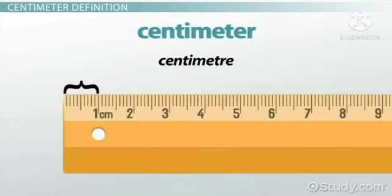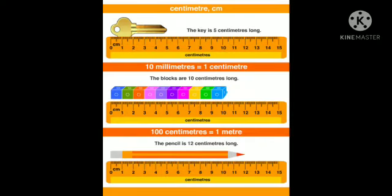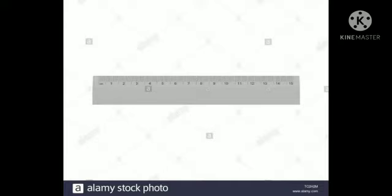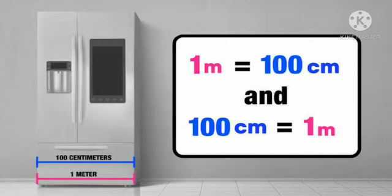Centimeters. It is too long to measure short things, such as pens and pencils. To measure these, we use a shorter measure called a centimeter. Look at the ruler in your pencil box — it is 15 centimeters long. There are 100 centimeters in 1 meter.